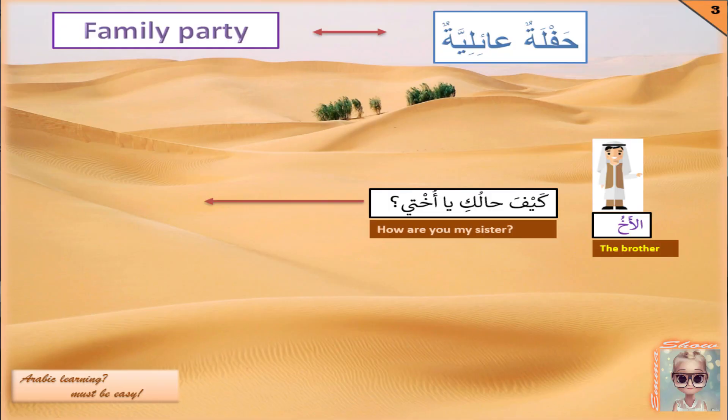The brother asks a question: كيف حالك يا أختي means 'how are you, my sister?' كيف حالك is 'how are you?' It's for feminine, right? Exactly. يا is the calling tool, and أختي means 'my sister', right? Very good.